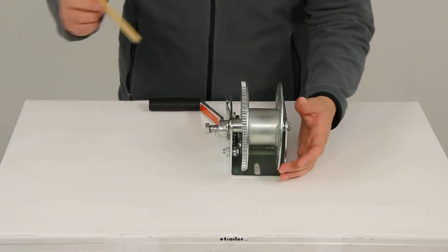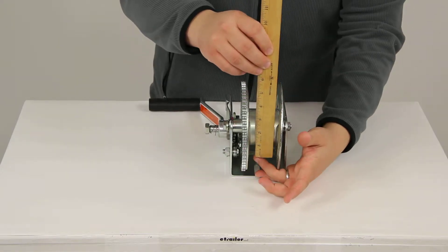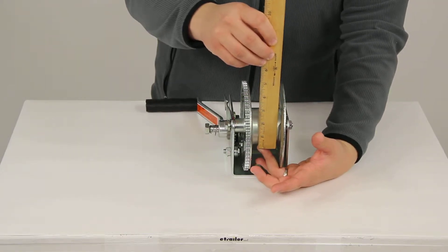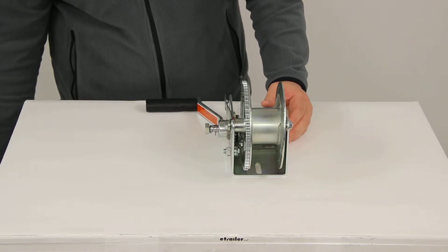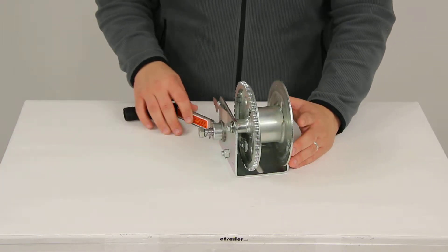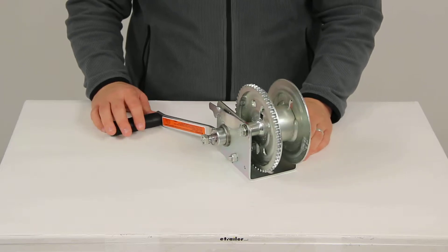The drum hub is going to give us a diameter of right at 2 and a half inches. This winch gives us the safety of a brake winch and the convenience of the freewheel option when it's needed.